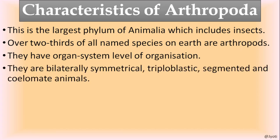The body is bilaterally symmetrical, meaning it can be divided into two equal halves in one vertical plane only. The body wall consists of three layers - ecto, endo, and mesoderm - so it is triploblastic. The body is segmented and coelomate animals. From Annelida onwards, all animals are coelomate. They have a true coelom.